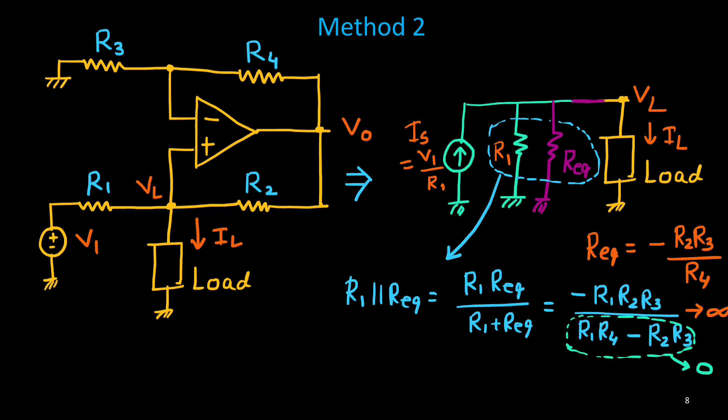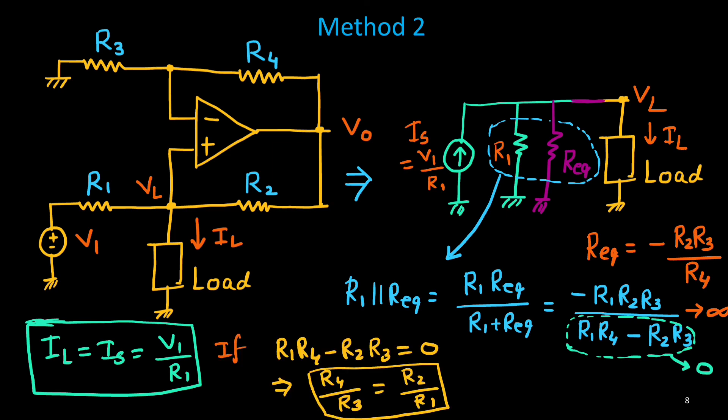And it will become infinite, if and only if, this numerator term is equal to 0. Therefore, we can say that, this IL will be equal to IS, equals to V1 by R1, under a condition, that, this R1 R4 minus R2 R3, that is equals to 0. And if you simplify it, you can rewrite as R4 upon R3 equals to R2 upon R1. So, this is the balance condition of this bridge. And if it is satisfied, then Howland current source will be generated. And it will be independent of the load.